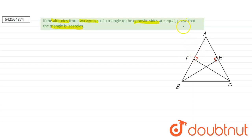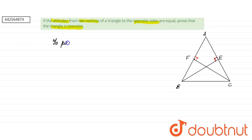We have to prove that the triangle is isosceles, which means we have to prove that any two sides are equal. Let us prove that AB equals AC. That is what we have to prove.